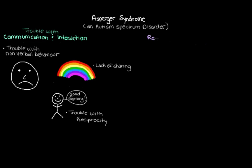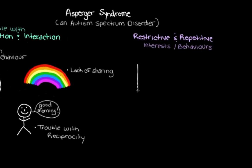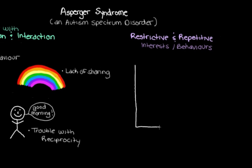There's one other main feature of Asperger's, and that's restricted interests and repetitive behaviors. To see what we mean by restricted interests, let's draw a graph showing the level of interest in a few different activities. On our y-axis, we have the level of interest — the higher up, the more interest there is.